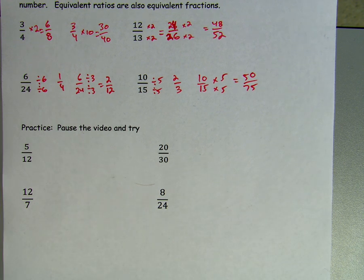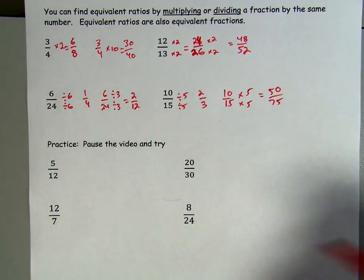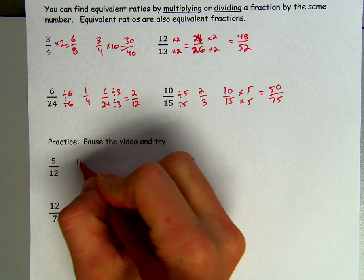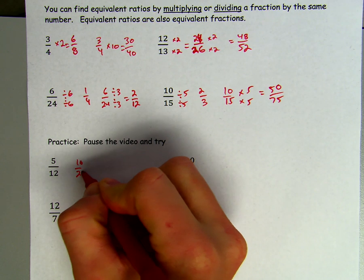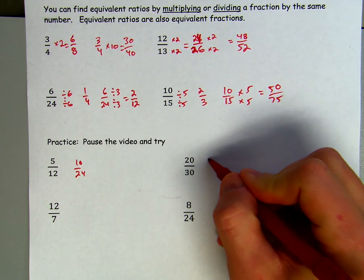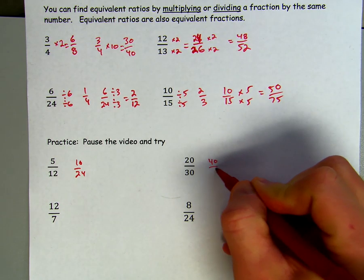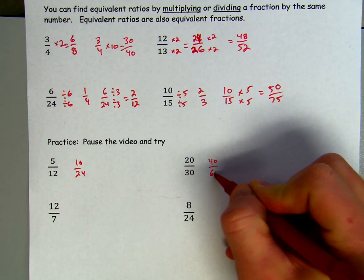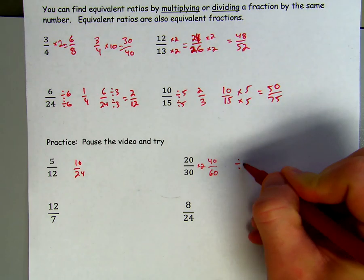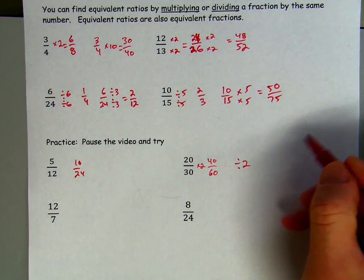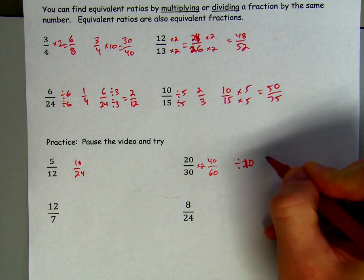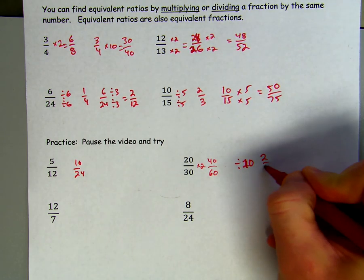Now that you've done them yourself, if you went nice and easy like I did at the top — like times 2 — you should have gotten like 10/24. Over here, you could have maybe multiplied by 2 as well and gotten 40/60. Maybe you decided to divide by 10, top and bottom, and gotten 2/3.